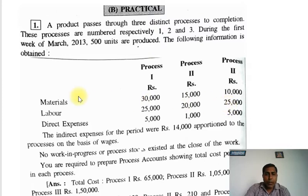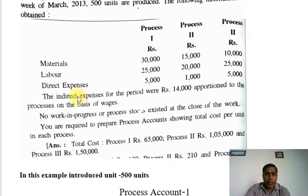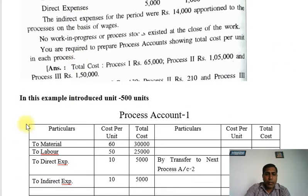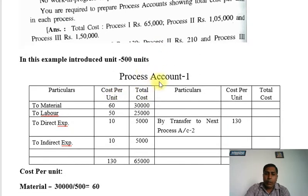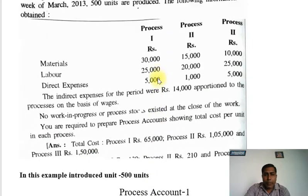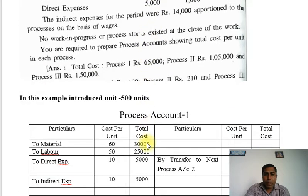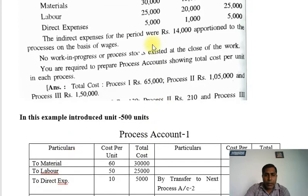Okay friends, now let's go to our calculation. First we will make Process Account 1. In this example, 500 units are introduced. So on the debit side: Material 30,000, Labor 25,000, Direct Expense 5,000.